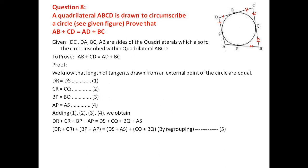On the left side: DR + CR = CD and BP + AP = AB. On the right side: DS + AS = AD and CQ + BQ = BC. Therefore CD + AB = AD + BC, which is AB + CD = AD + BC. Proved.